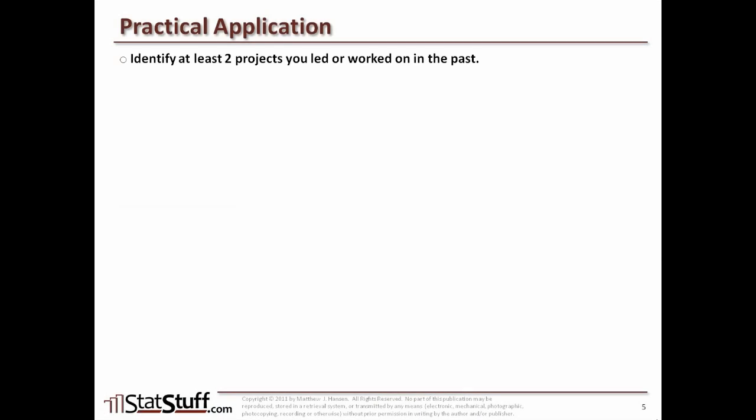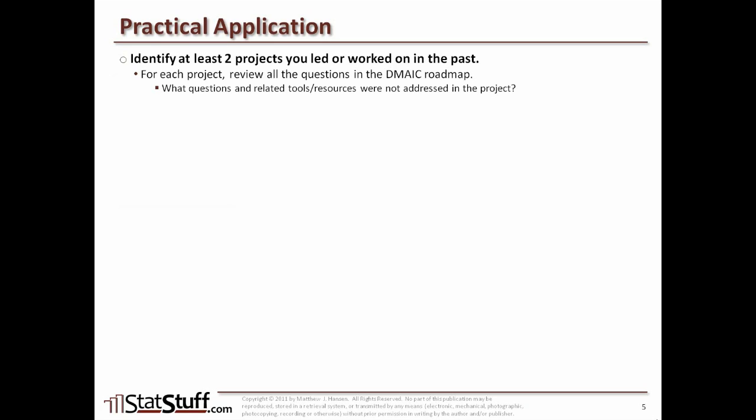Before we close this lesson, let's discuss how we can apply some of these concepts in a practical way. Identify a couple of projects that you've led or worked on in the past. For each of those projects, try to ask yourself a few of these questions in relationship to the DMAIC roadmap — looking over the first and second levels we just reviewed. Compare those questions to what was actually done in those example projects. What questions or related tools or resources were not addressed in your project? Why were those tools or resources not used? And what different outcome or results could have been realized if you had addressed those issues and used those tools after all?